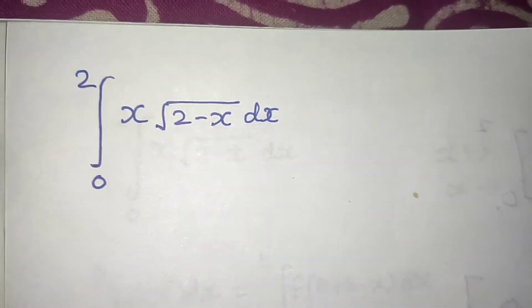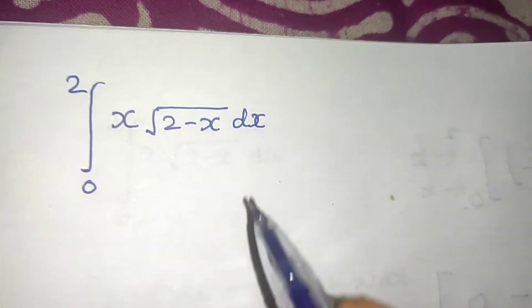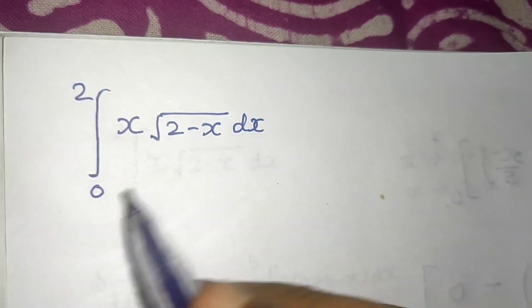Let's see a question from definite integration. We have to integrate x under root 2 minus x from 0 to 2.